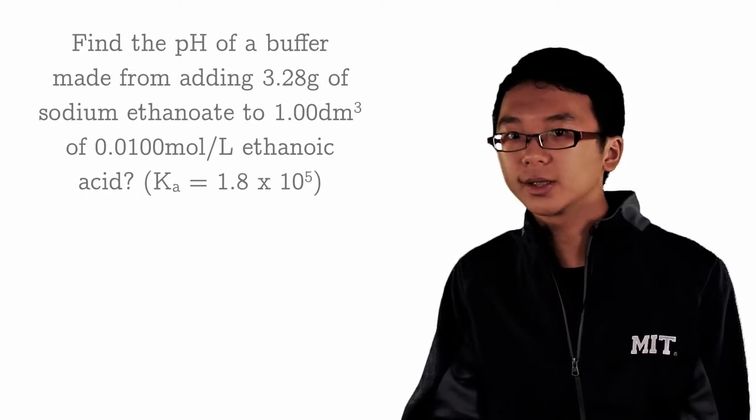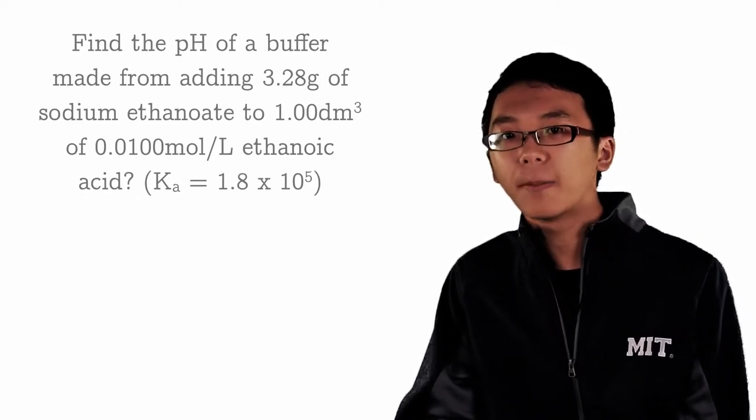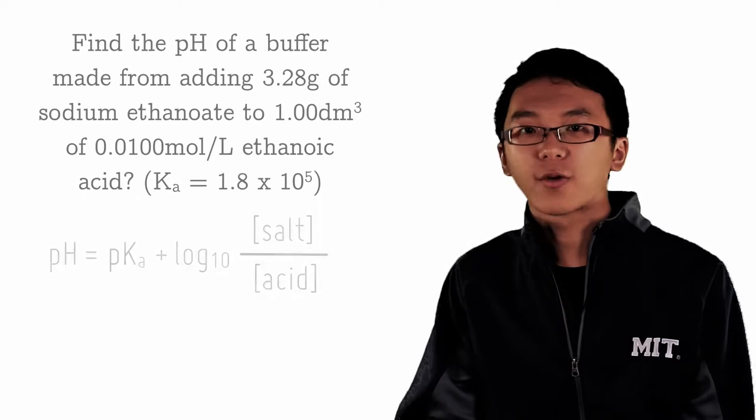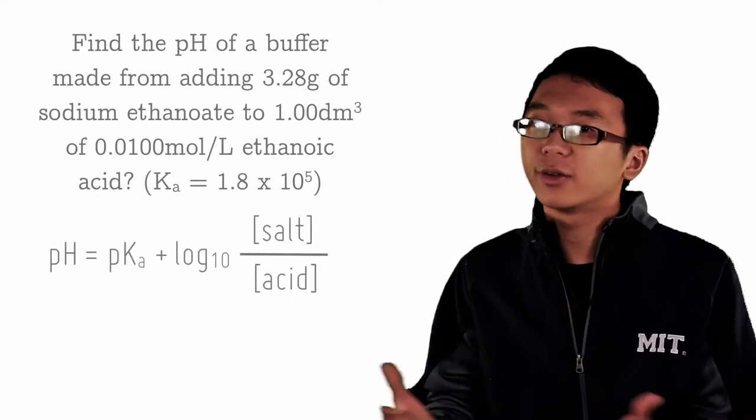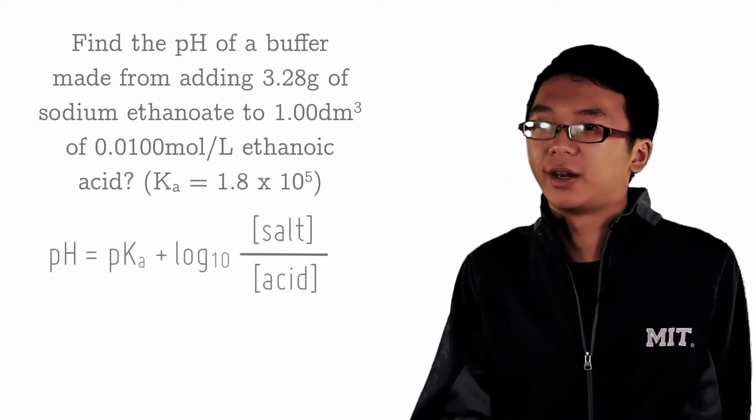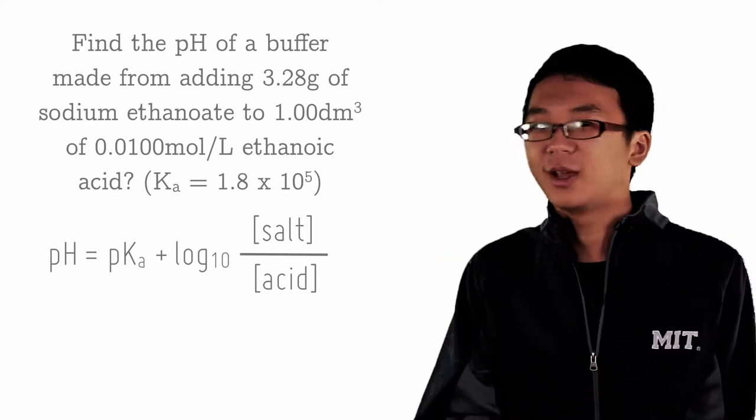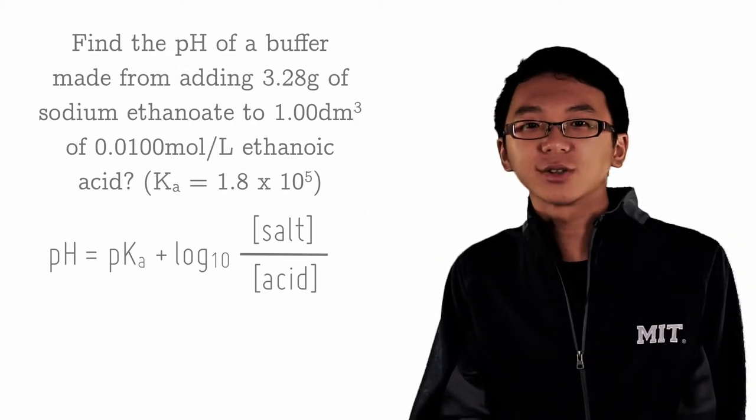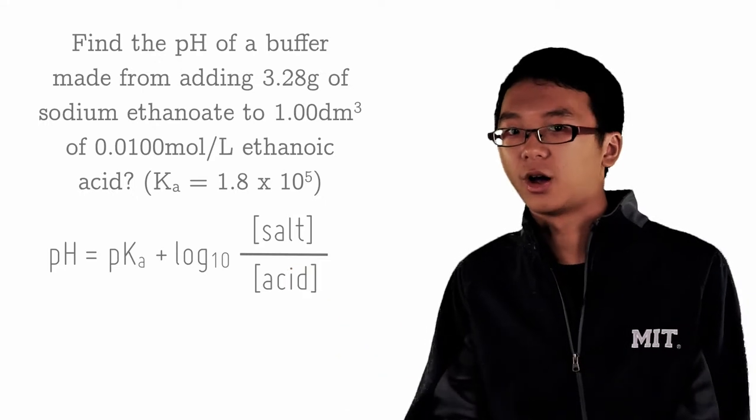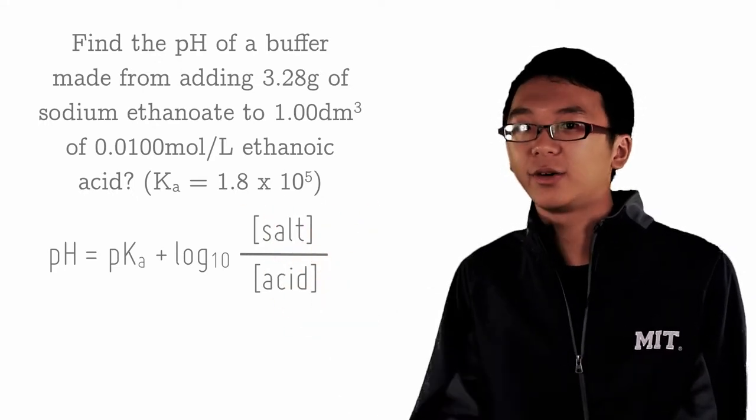So when we think of buffers, the equation that should pop up in your mind to find pH, of course, is the Henderson-Hasselbalch equation. And if you don't remember the name well, I remember it as the handsome handbag equation. But the HH equation will do. So this is the equation. We just need all these things on the right and then we will get the pH.